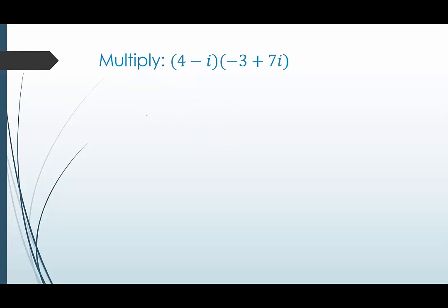Here we have two complex numbers that both have a real part and an imaginary part. So we're going to use FOIL or the distributive property, whatever makes sense to you. We want to make sure that each part of this number gets multiplied to each part of this number. 4 times negative 3 is negative 12. 4 times 7i is 28i. Negative i times negative 3 is positive 3i.